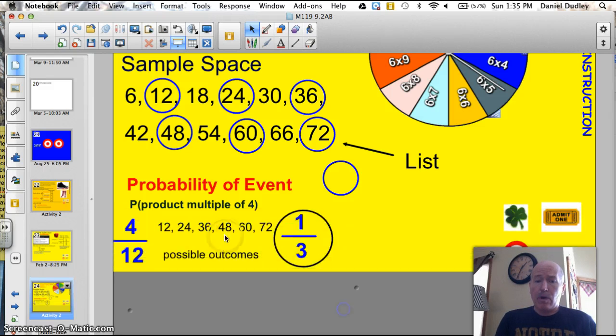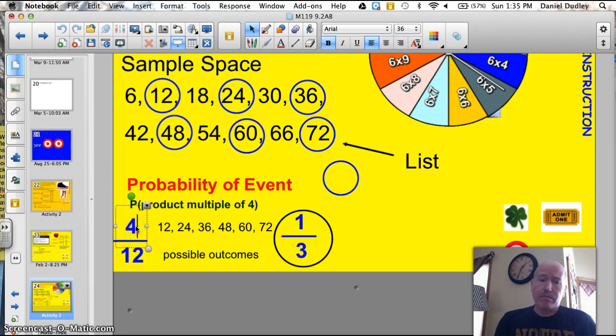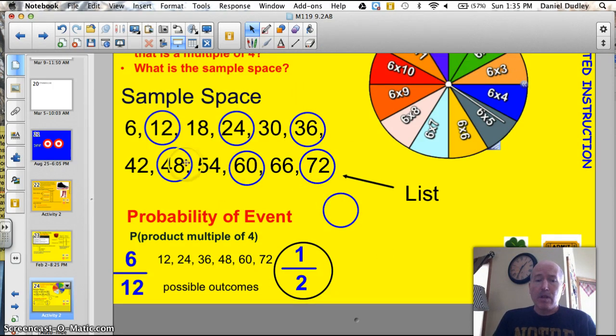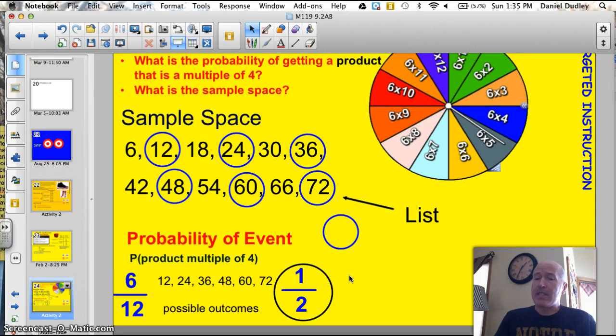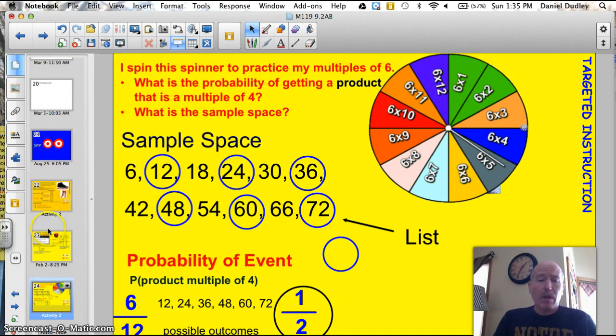Probability of the event getting a multiple of four is actually, I did that wrong. Probability of getting a multiple of four is actually six twelfths. Six out of the twelve. And, of course, that can be reduced down to one-half. Sorry, I forgot to change that. So, you take a quick look at the sample space. Those are all the different numbers that are listed. Those are all the different multiples. And then the total possible outcomes, you reduce it down. So, you're just using that sample space, that list, to find your probability.